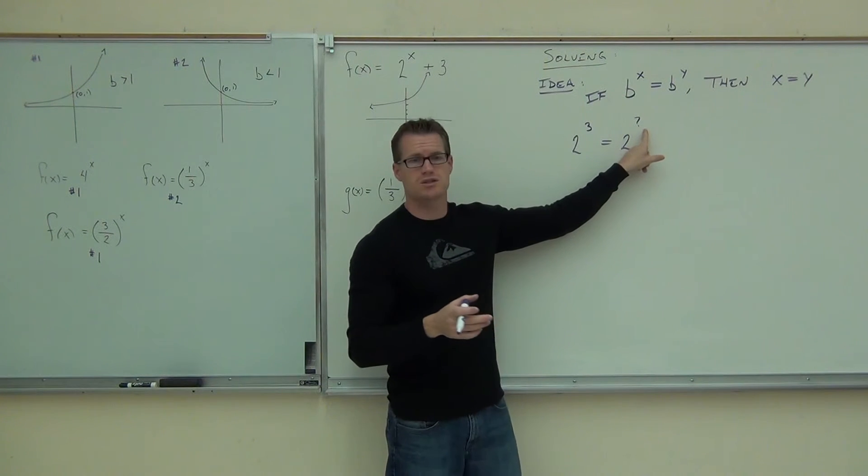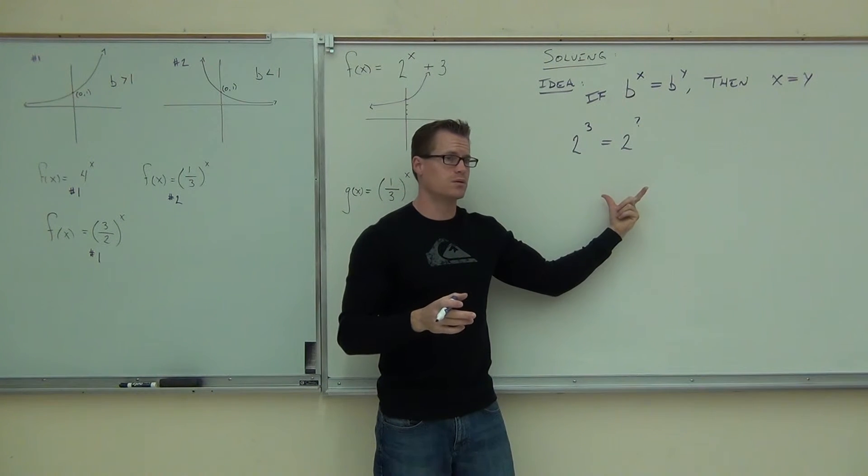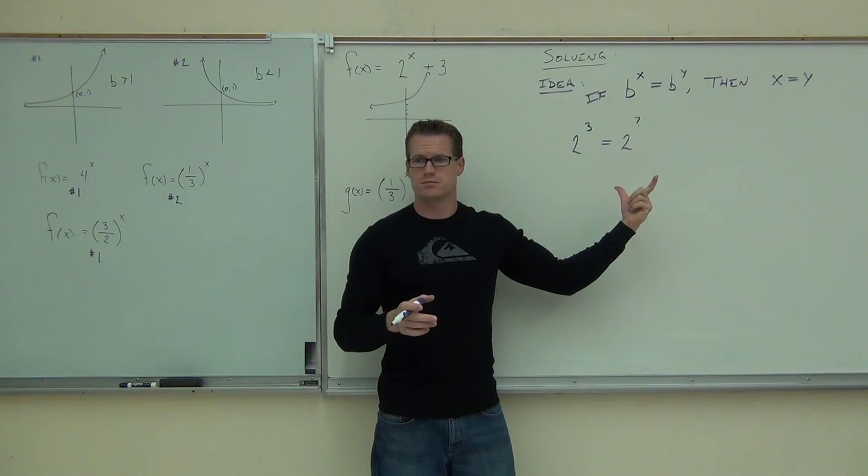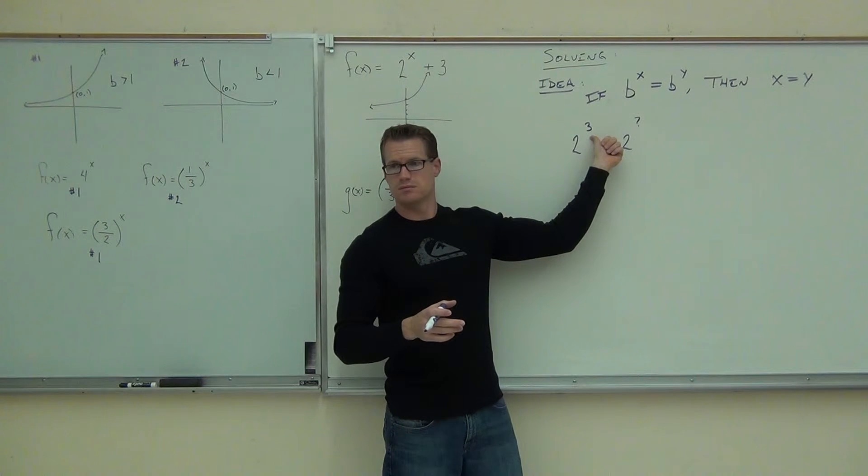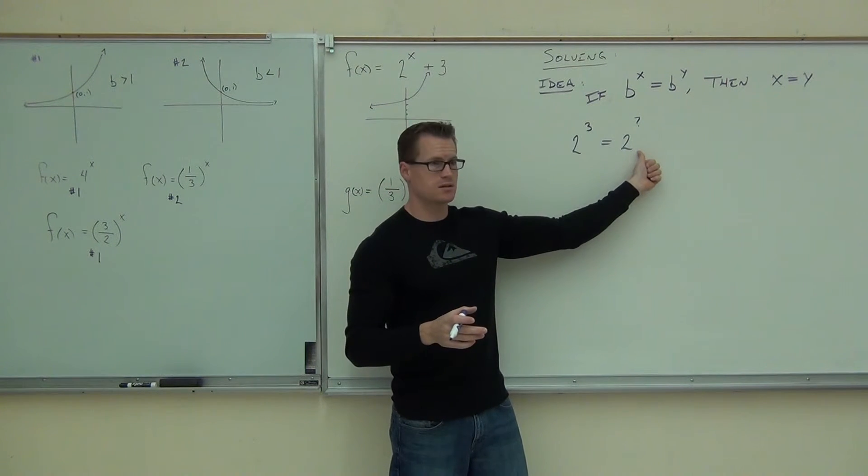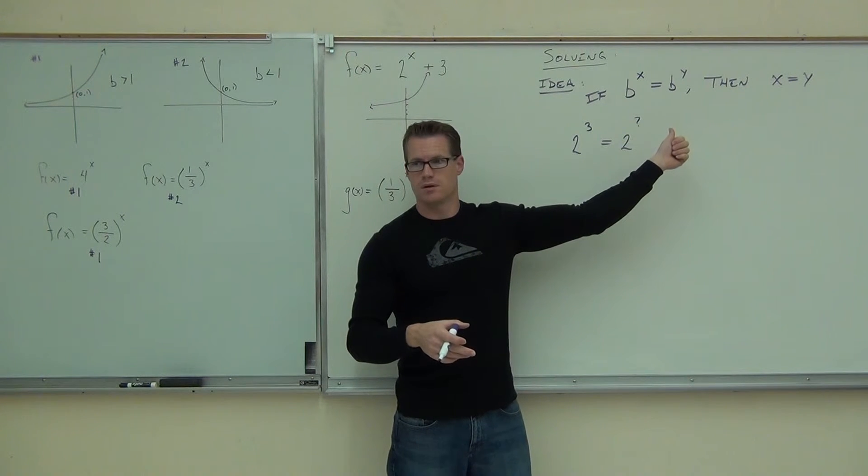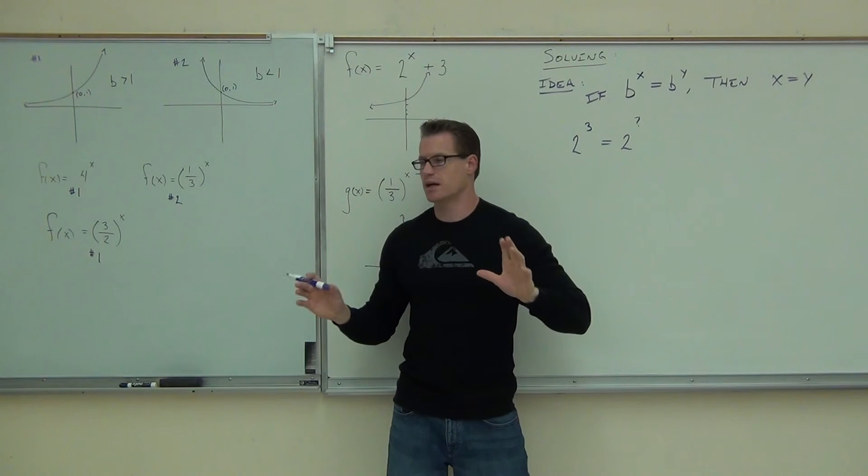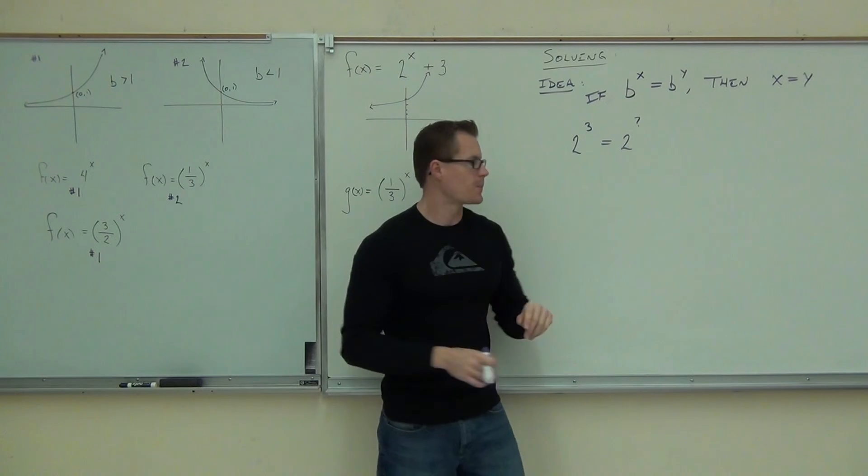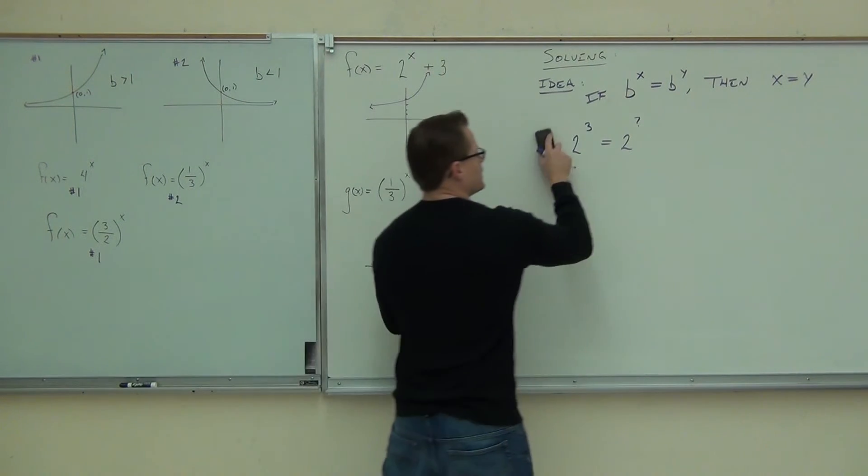Are they going to be equal? No. The only way that, this is 8, right? The only way this is also going to be 8 is if you have 2 to the 3rd. If you have 2 to anything else, it's not going to be 8. You're going to have something different. That's the whole idea. Now, how we're going to use that, how we're going to use that is with problems like this.